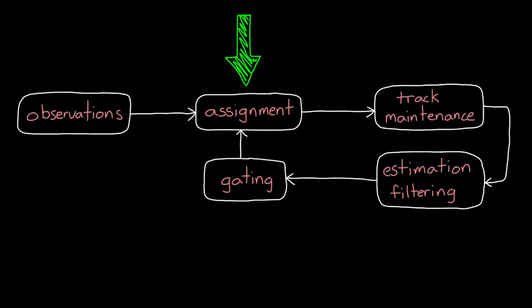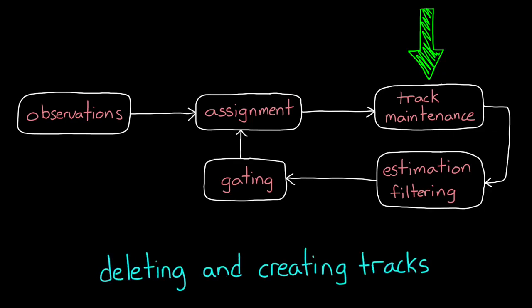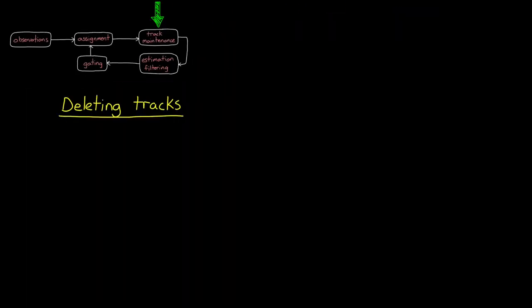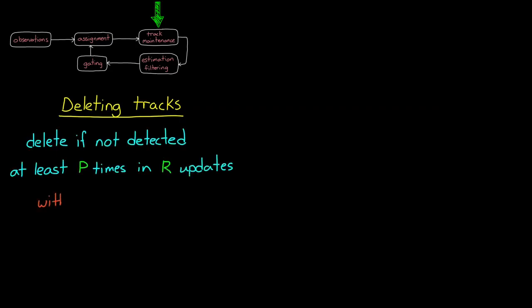Not all observations get assigned, and not all tracks have observations. This is where track maintenance comes in, in the form of deleting and creating tracks. But as I said before, we have to be careful so we don't do anything prematurely. So let's start with one way to delete tracks in a conservative way. Rather than saying an object is gone as soon as we miss a single observation, we could delete tracks only if a track has not been assigned to a detection at least P times during the last R updates. In this case, P and R are parameters that you can tune to your situation. So you might say delete a track if it hasn't been detected at least four times in the last six updates.